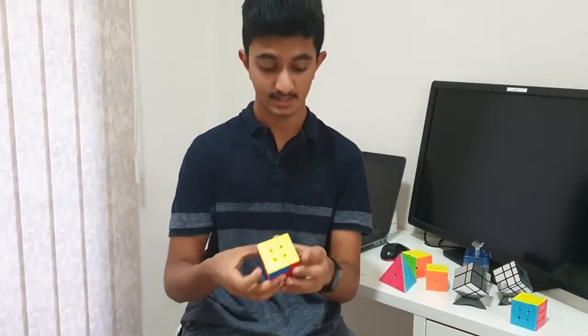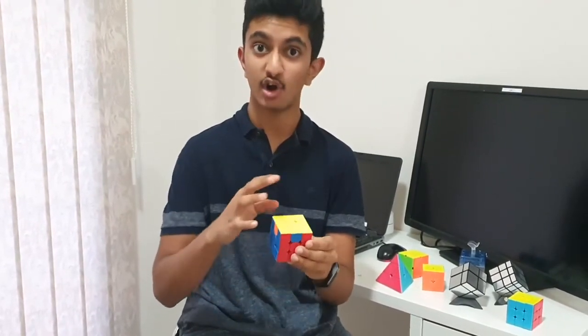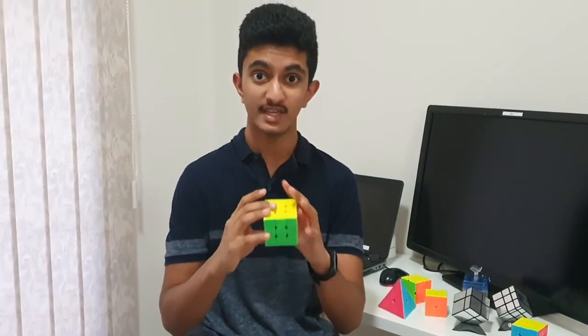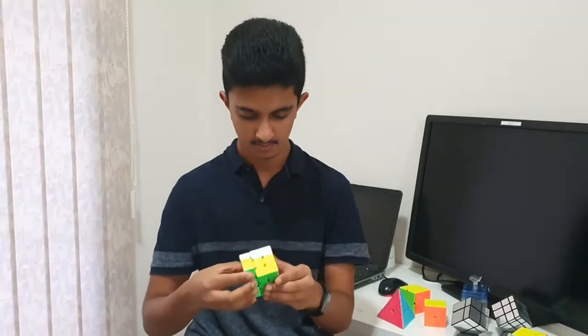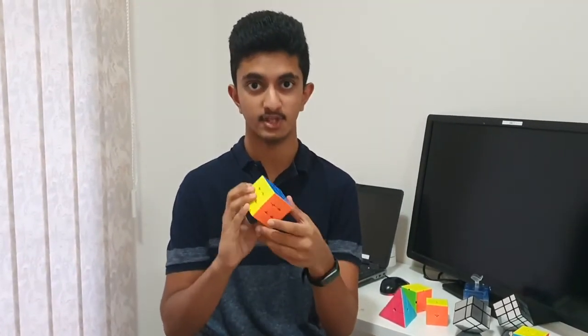Now, for the corner pieces. That's our corner pieces. Now, we solve the entire cube. That's our fully solved 3x3 Rubik's cube.